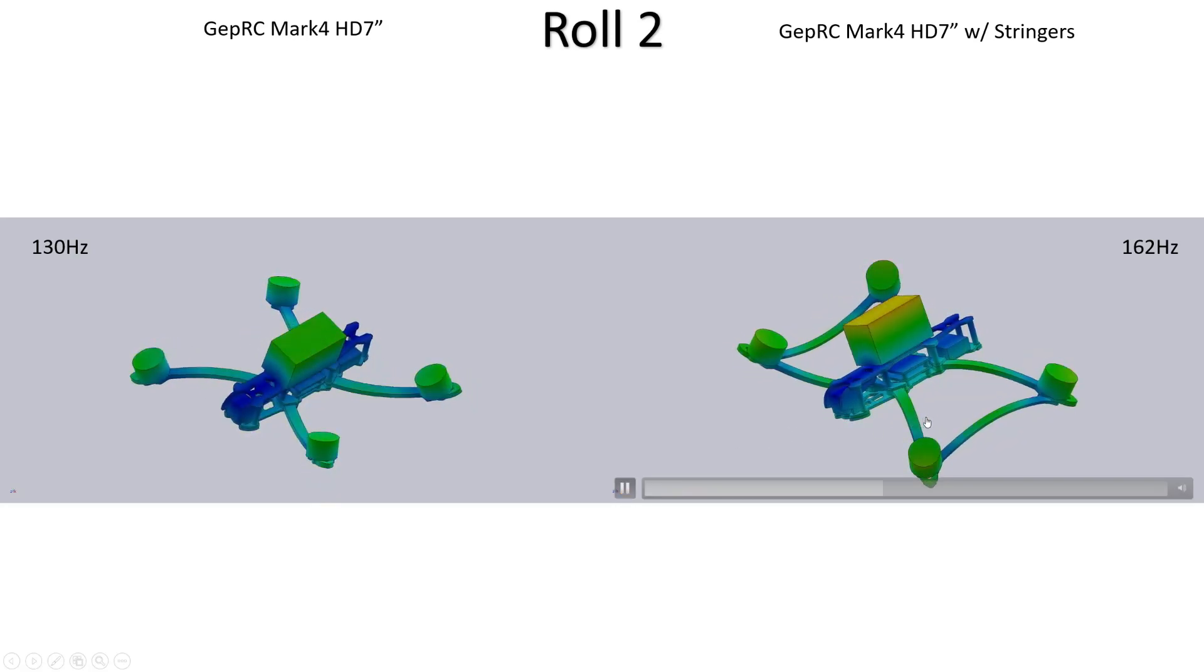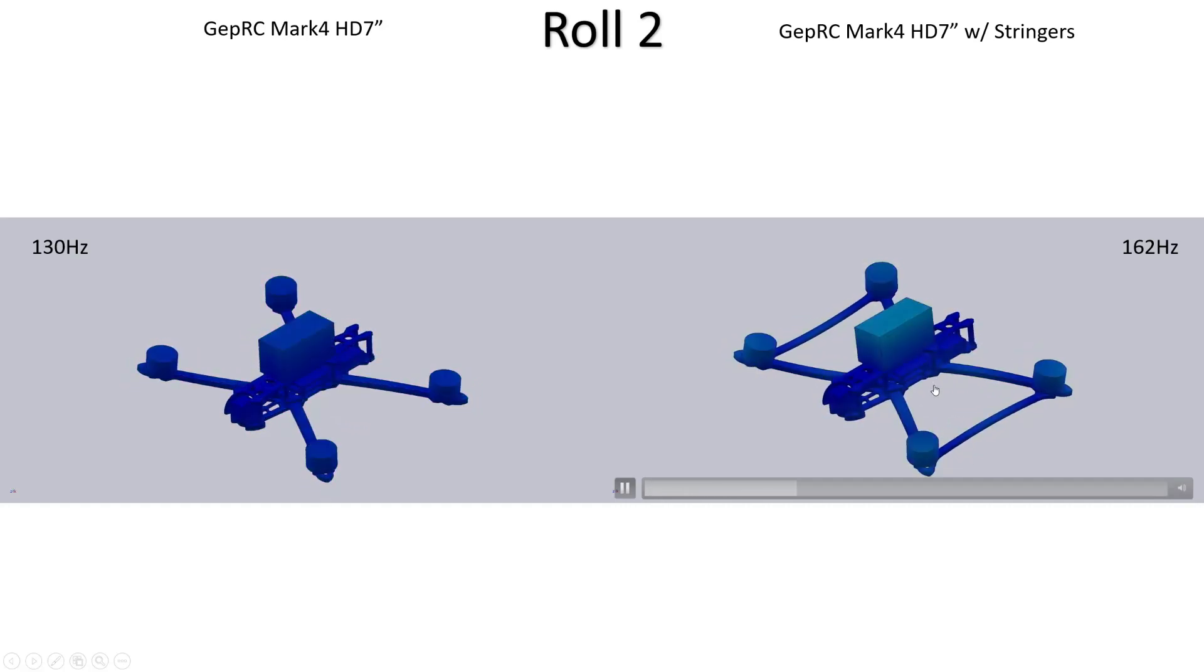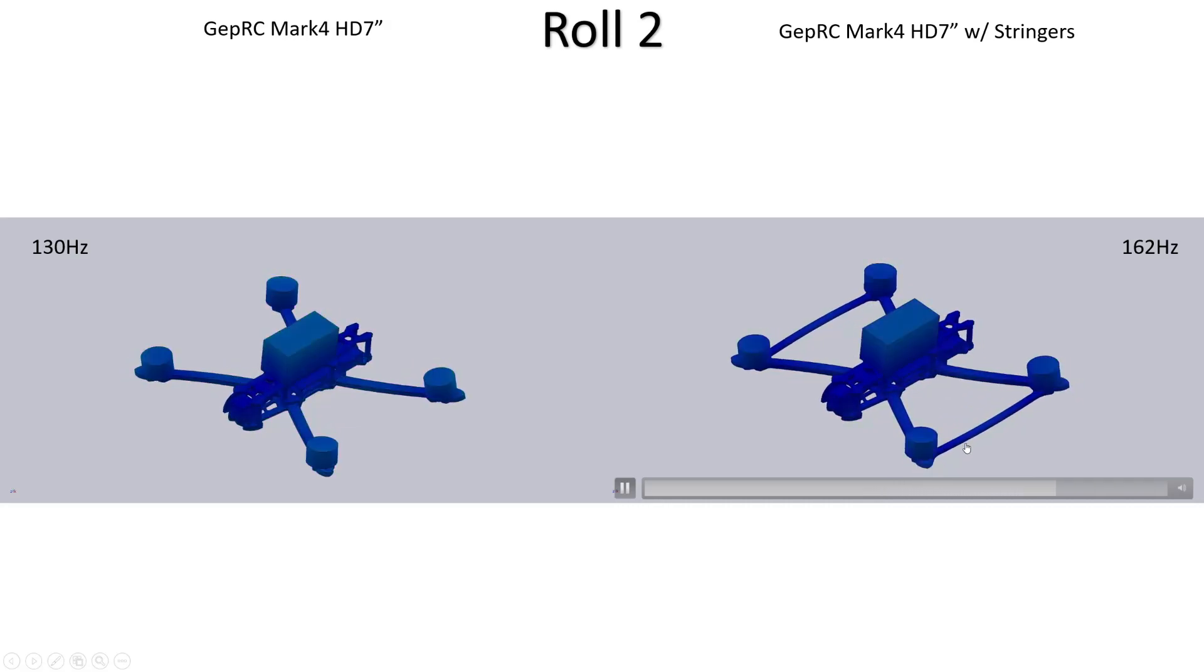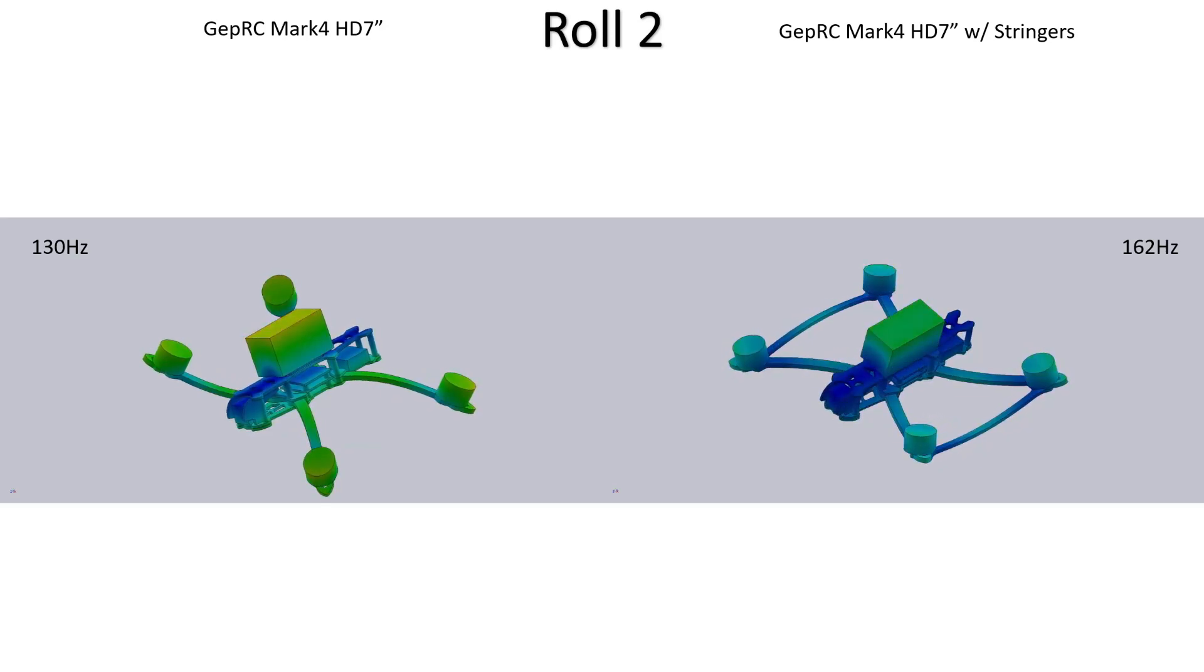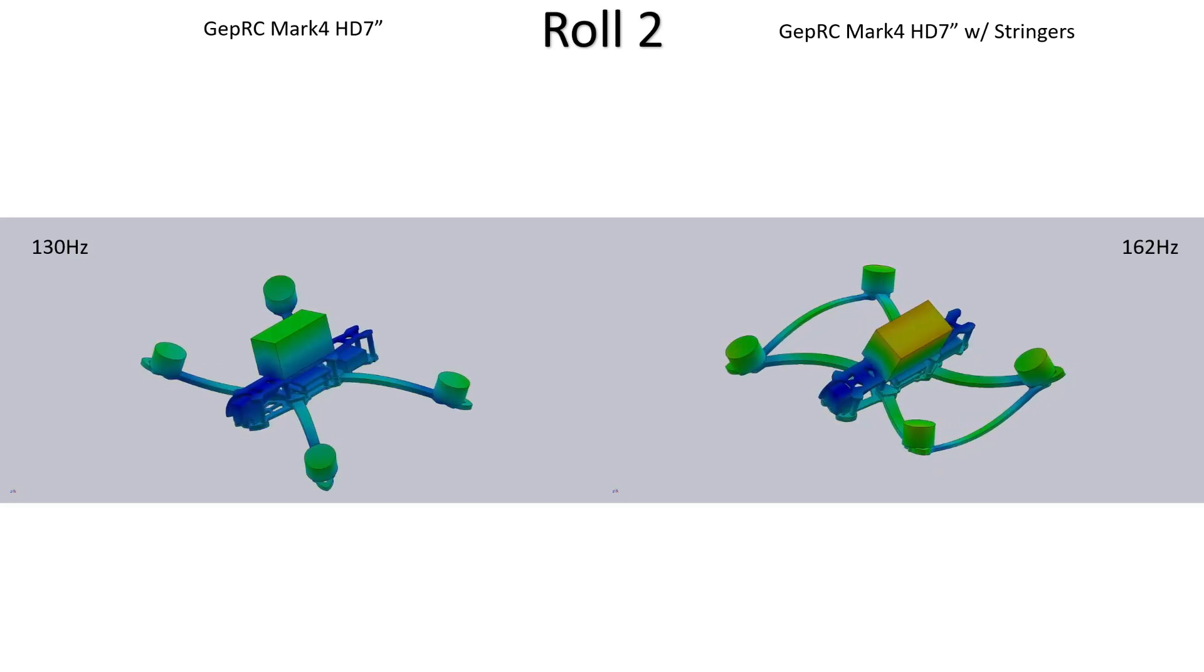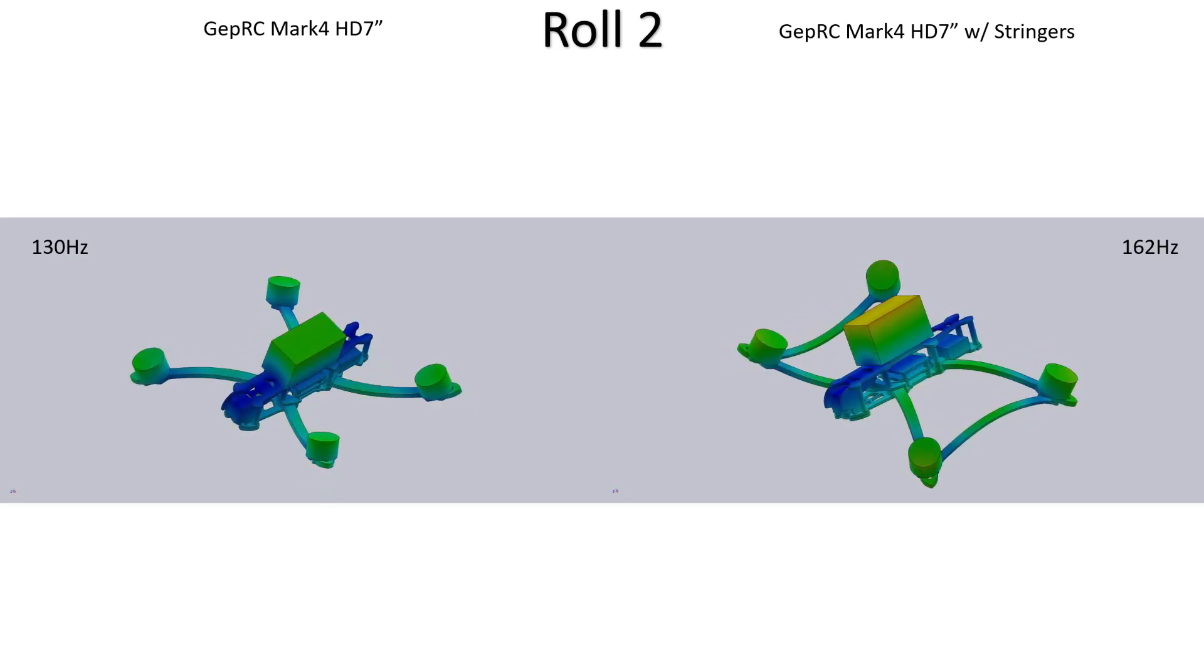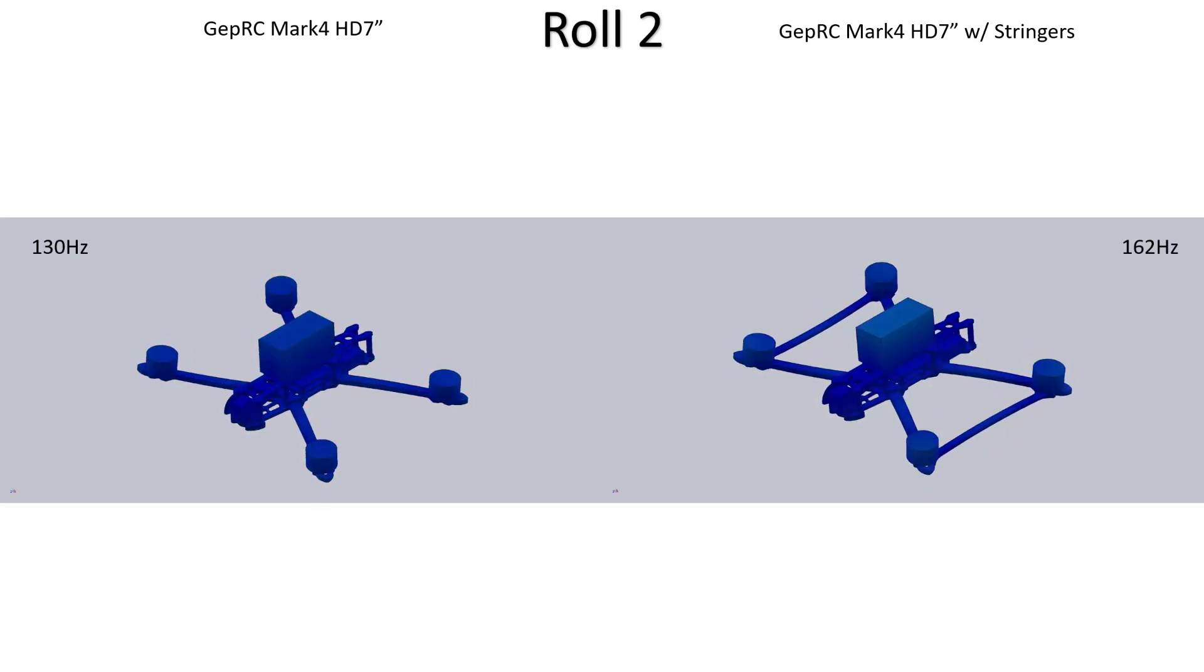With the stringers fitted we can see that the mode shape is pretty much identical but again if you look closely at the stringers you can see that it's being bent by that mode. So that vibration is now having to bend extra carbon and whenever you have to bend more carbon it's going to make the mode stiffer and that's going to push the frequency up. You can see here it's quite a significant increase of 32 hertz which will really help, allows you to move that cutoff up an additional 30 hertz which is really going to reduce your phase delay, improve your prop wash handling, all of these good things.